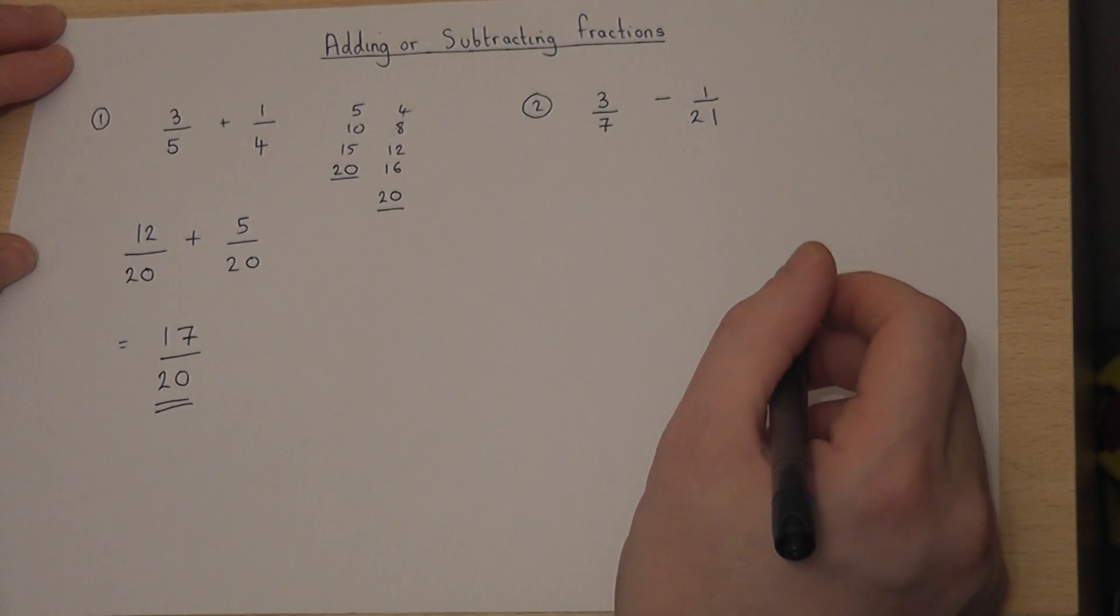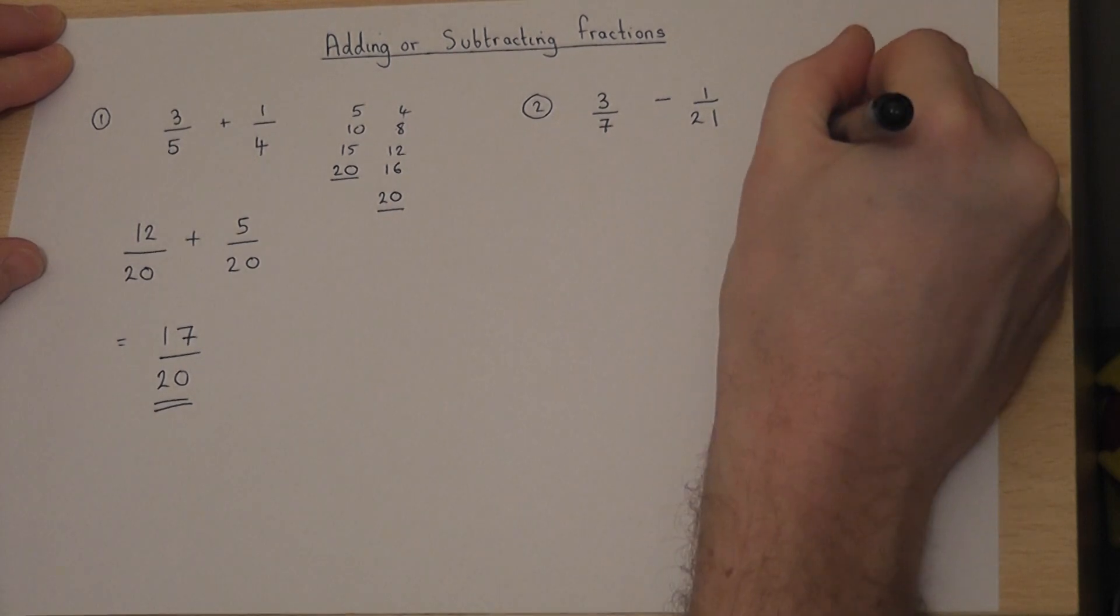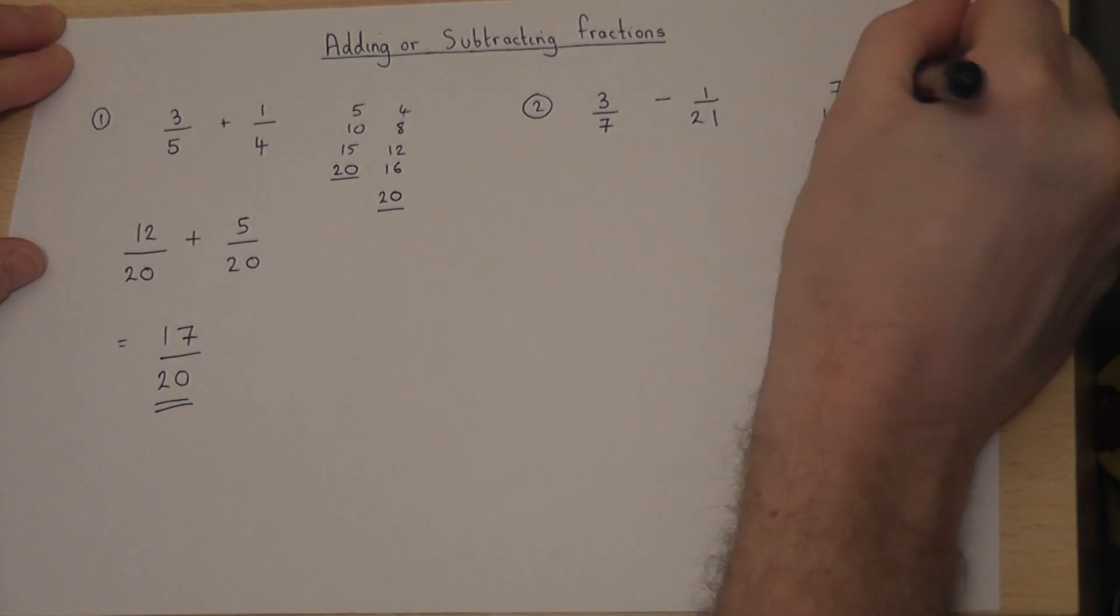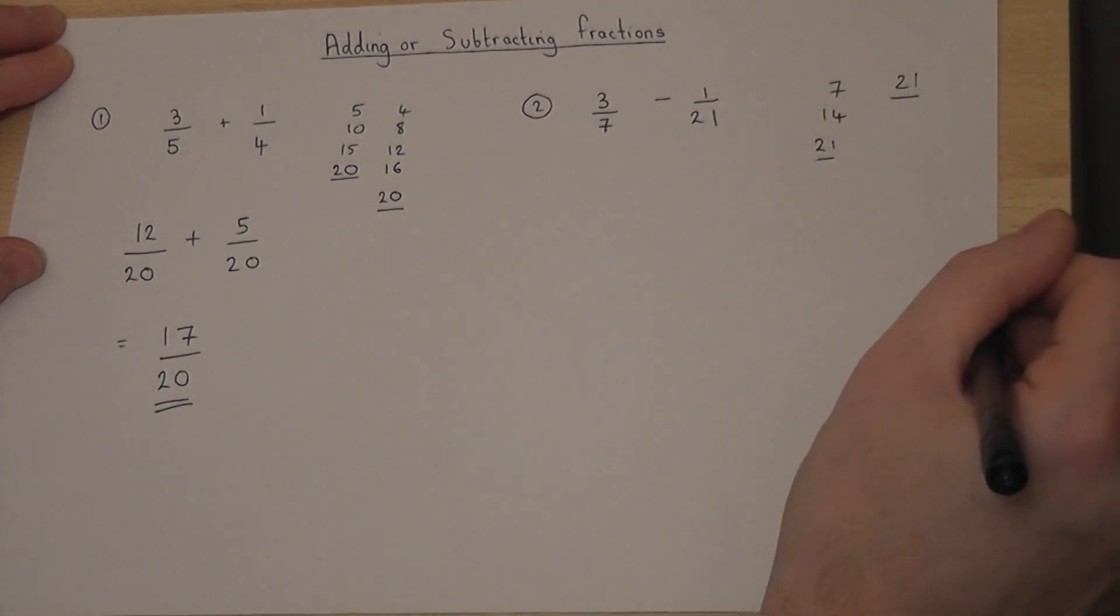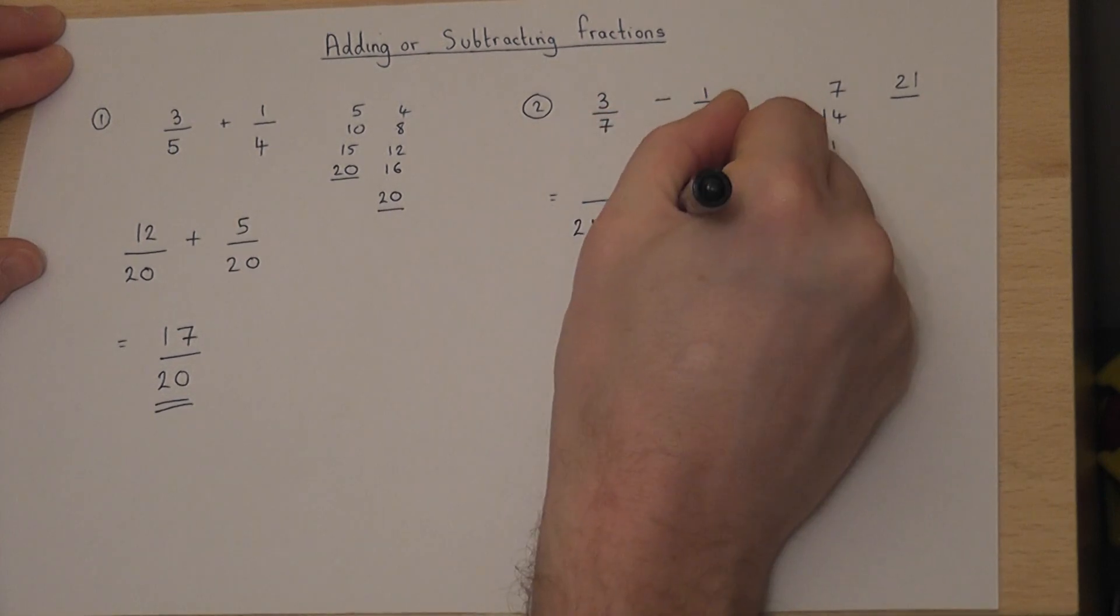Subtracting fractions is the same. I look for the lowest common multiple of 7 and 21, which happens to be 21. So I write both fractions over 21.